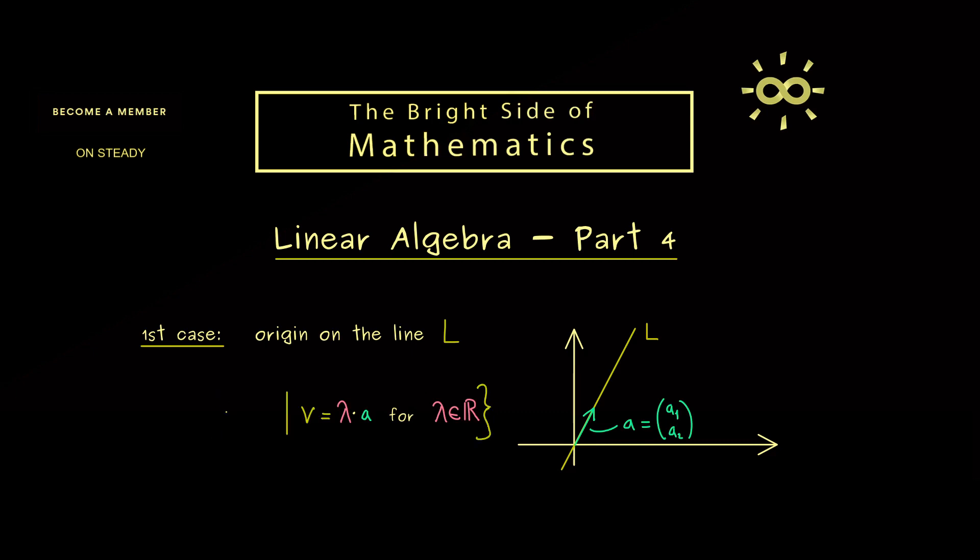And therefore we can describe the line L with this set here. More precisely, we would say this is the set of all vectors V that fulfill that they are given in the form lambda times A. And then we are finished; the line L is described with this set.